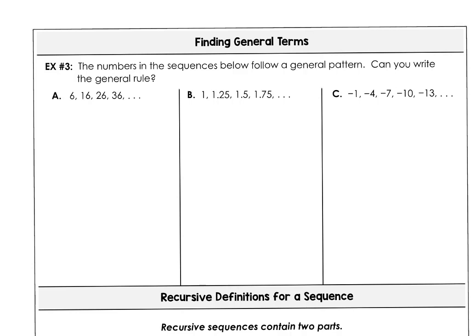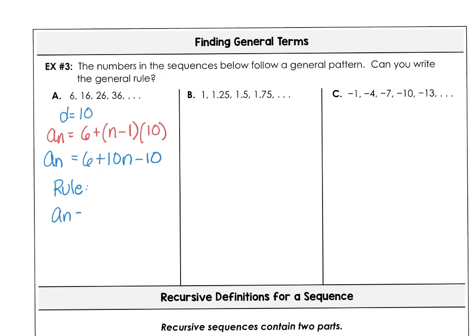Many times we'll want to find a general rule or a pattern. In Example 3, we have the sequence 6, 16, 26, 36. The difference between each term — I'll call it D — is 10. To write a general rule, a sub n starts with 6, and then n minus 1 times 10. Simplifying that: 6 plus 10n minus 10, so a sub n is 10n minus 4. That's a linear sequence of terms.